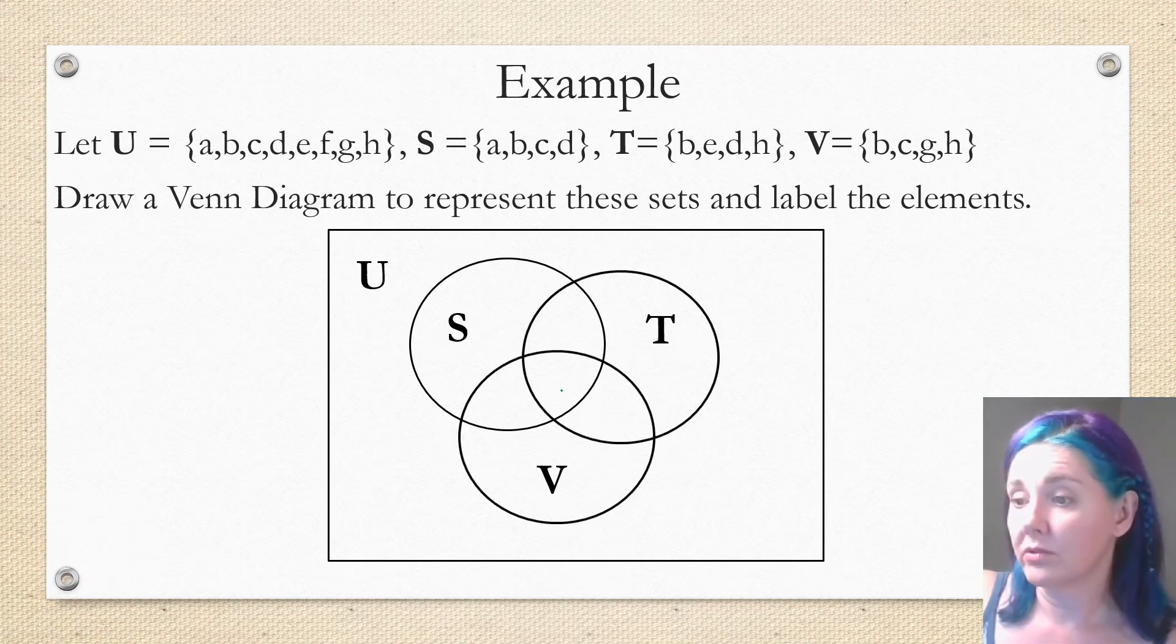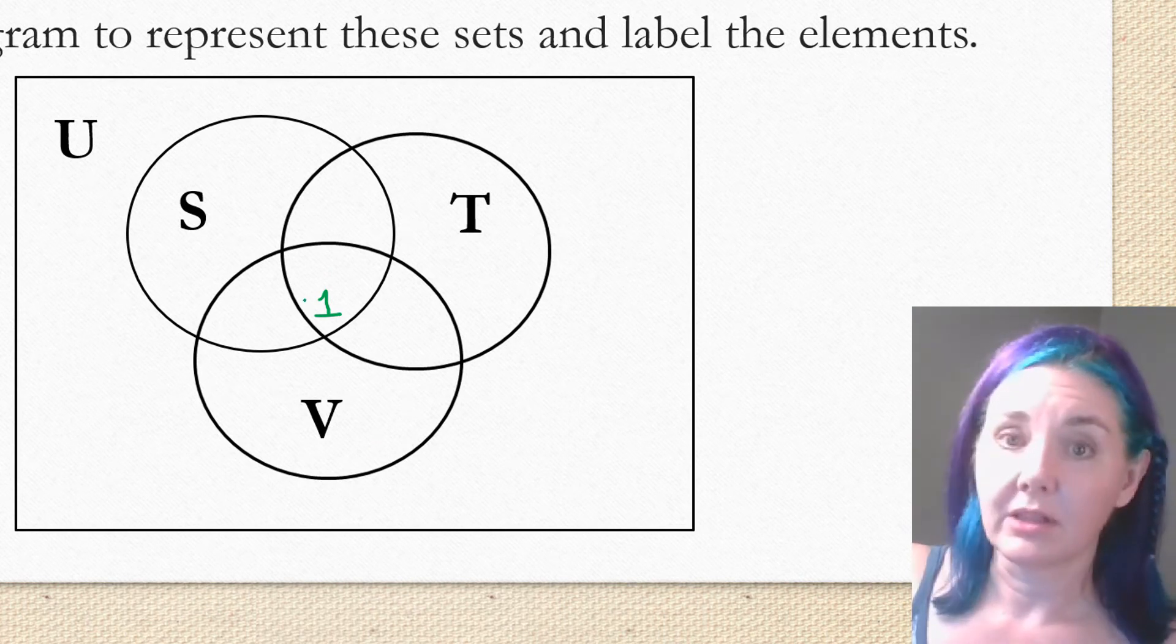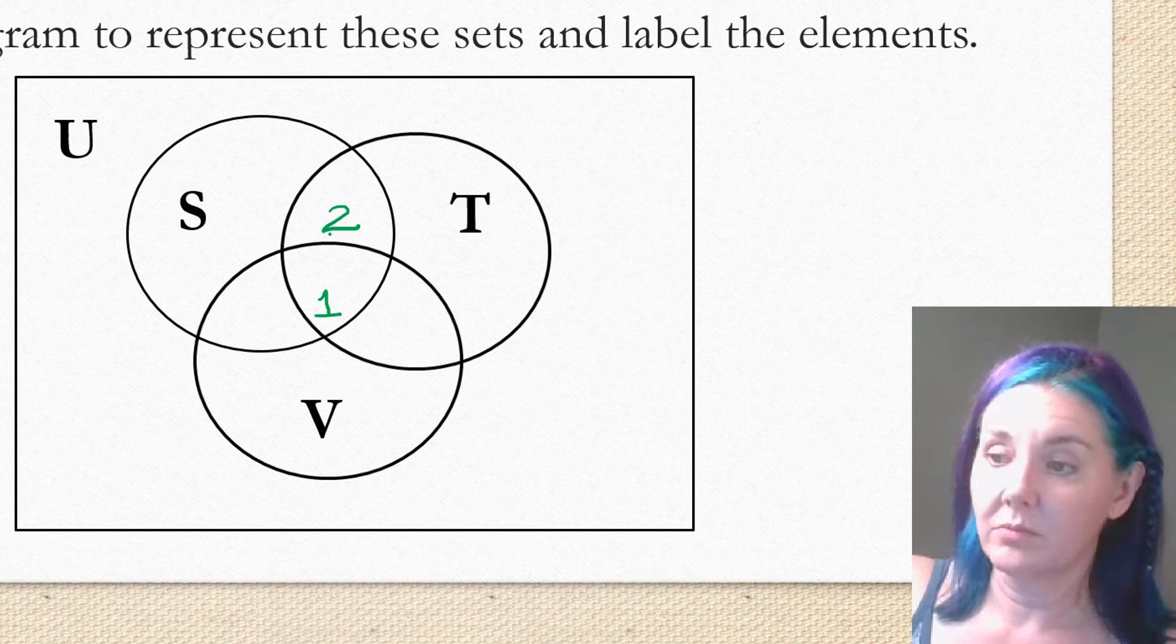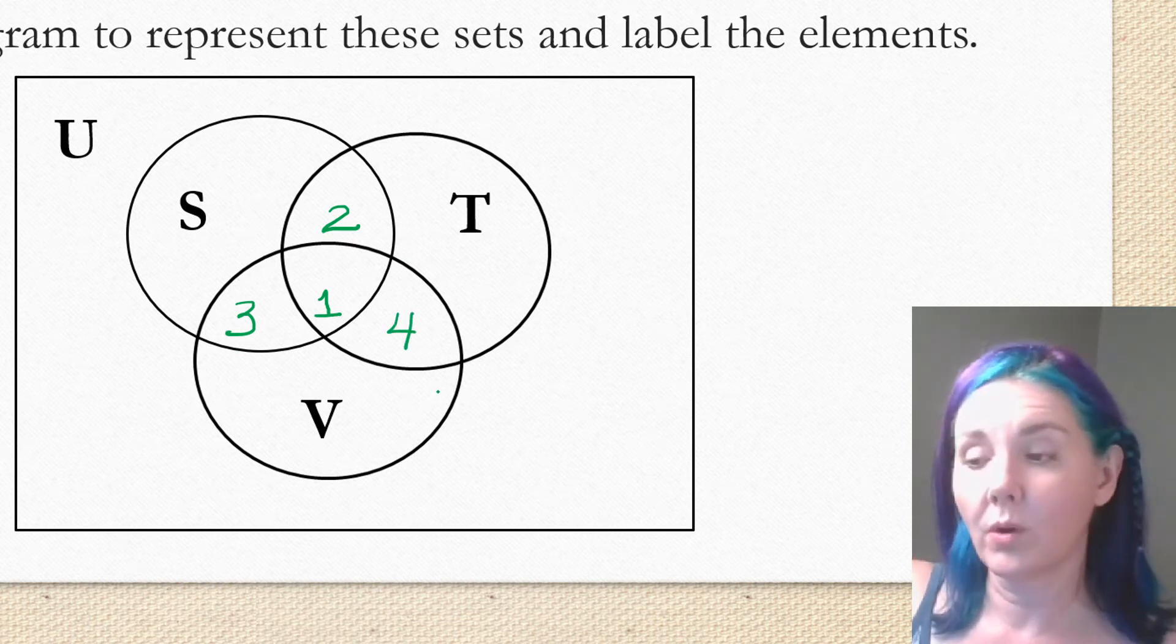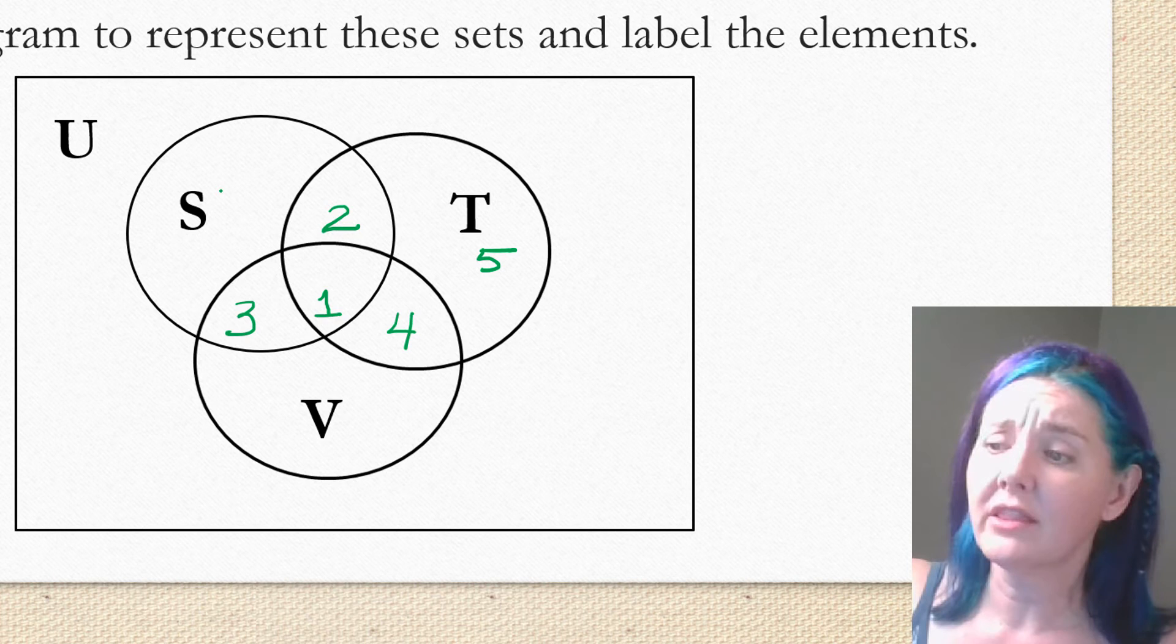Now how many regions do we have in this diagram? We have the region in the very middle that's part of S, T, and V. I'm going to label that one. So region two, I'm going to let be this little piece that's in S and T but not V. Region three, I'm going to let that be the piece that's in S and V but not T. I'm going to call this piece region four. That's in T and V but not S. The part that's just in the set T, I'm going to call that region five.